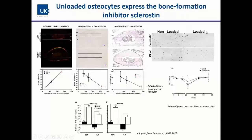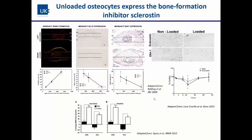Another study also looked at DKK1 expression and confirmed greater expression of sclerostin in non-loaded bones, in a time-dependent manner. Investigating hind-limb unloading — where mice were suspended by their tails to create an unloading situation — and giving them sclerostin antibody showed that the normal loss of bone mineral density upon hind-limb unloading, both in total body and hind limb, was actually lower when sclerostin was inhibited.